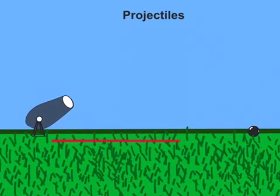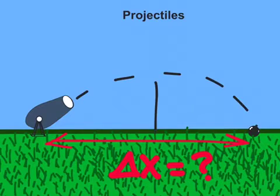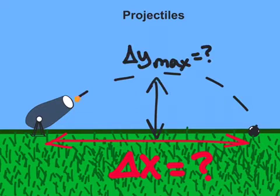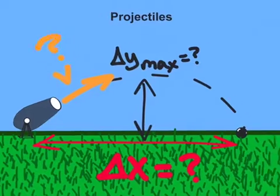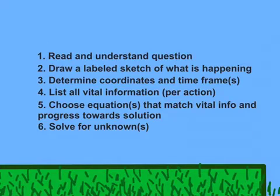In physics class you might be asked things like how far did a projectile go before it landed, or what was its maximum height, or even how fast was it going at some arbitrary time. Well, we're going to use these six problem-solving steps to solve any of those questions.